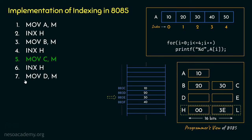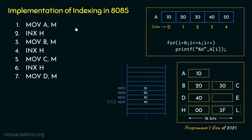In instruction number 6, we perform INX H again, incrementing the HL register pair so its content becomes 003F. The microprocessor will now point to address 003F. Executing the last instruction, MOV D, M, the content at memory location 003F, which is 40, will be moved into general purpose register D. So this is how, with the help of the HL register pair, we can implement the concept of indexing in the 8085 microprocessor.